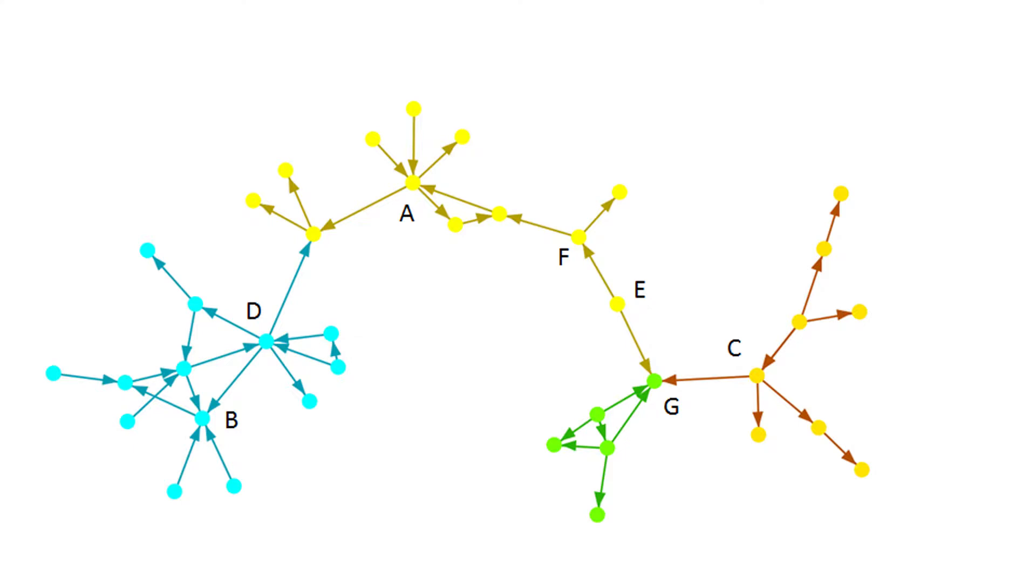Okay, so this map looks different from the previous one, right? There are several very important actors in this system. Actors D, B, A and G are resource hubs. You see how they all have several arrows each pointing into them.